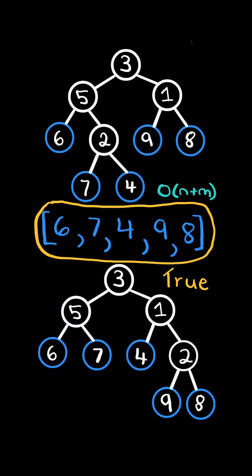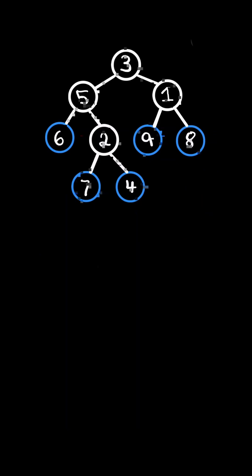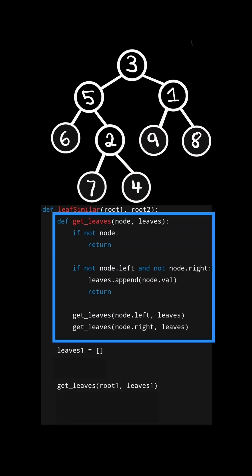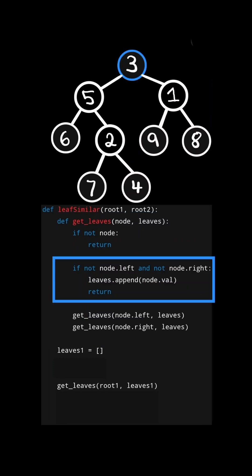We will solve this in O of the length of tree 1 plus tree 2 time. Let's first figure out how to get the leaf value sequence of one tree. Consider the code below. We will define a recursive function that takes in a root node and an empty list.